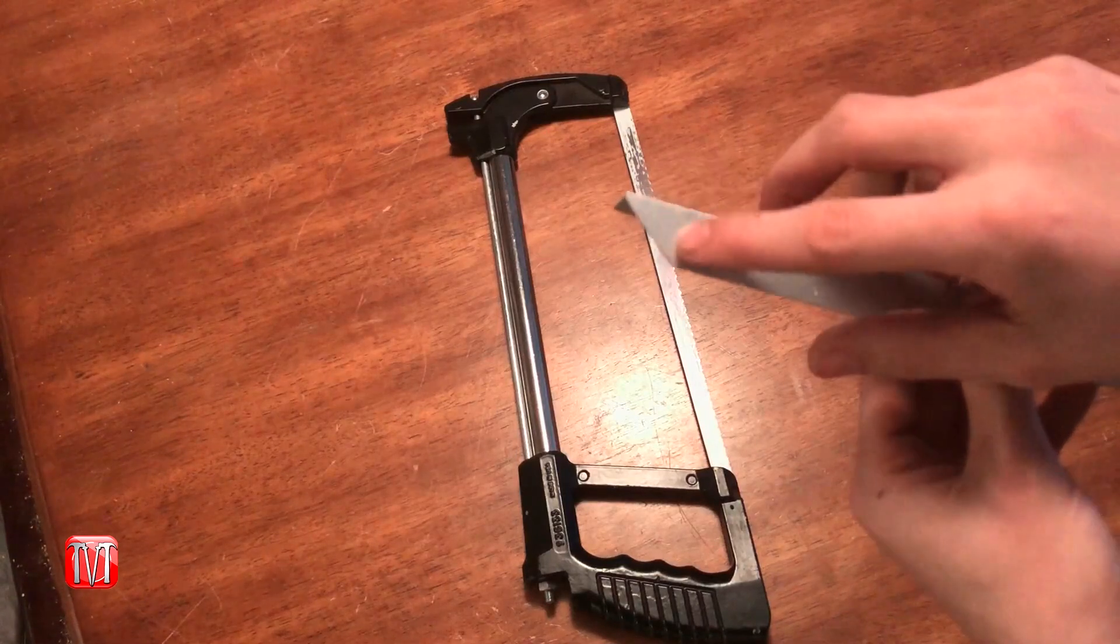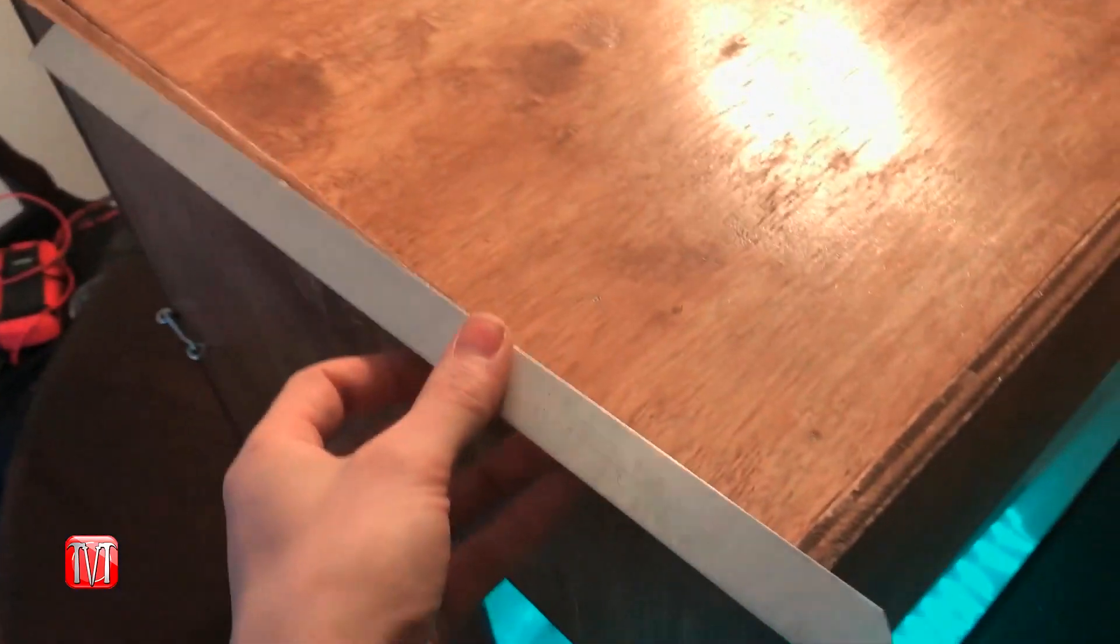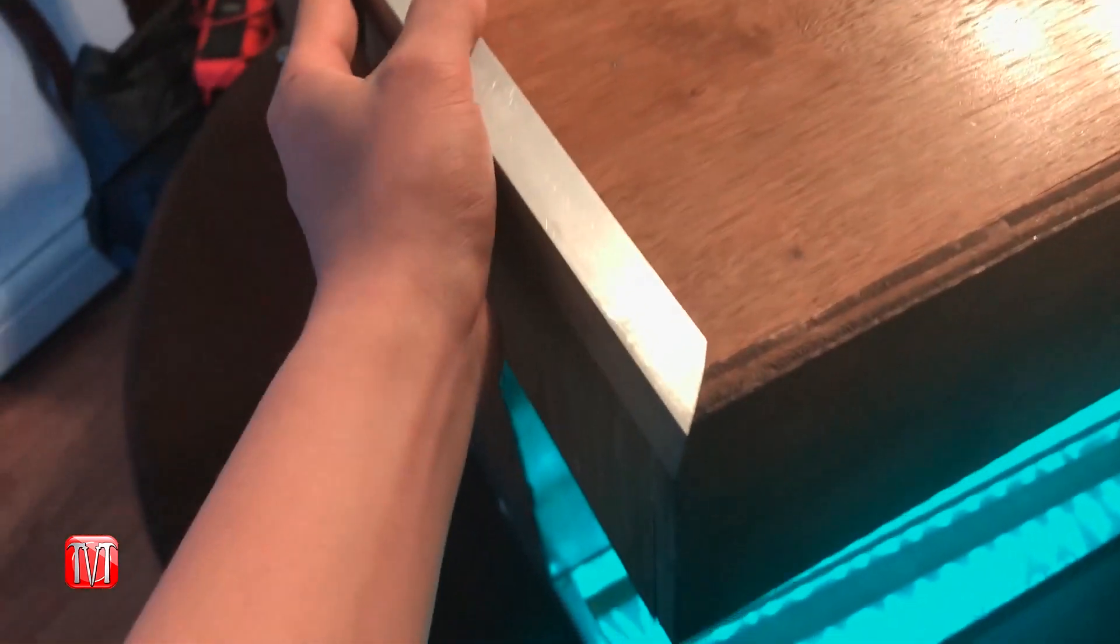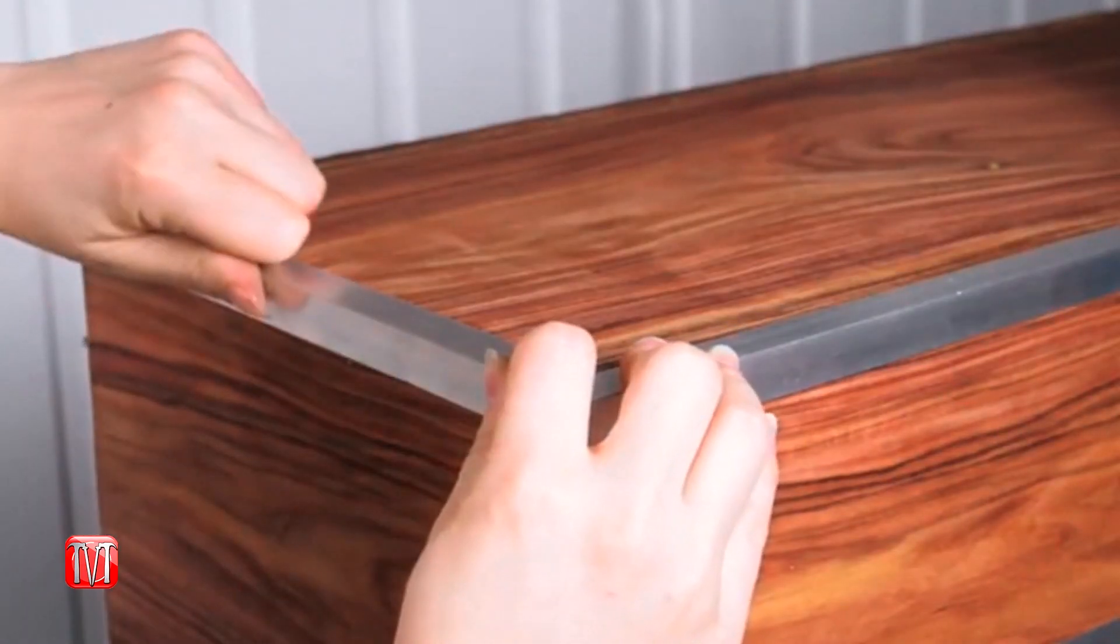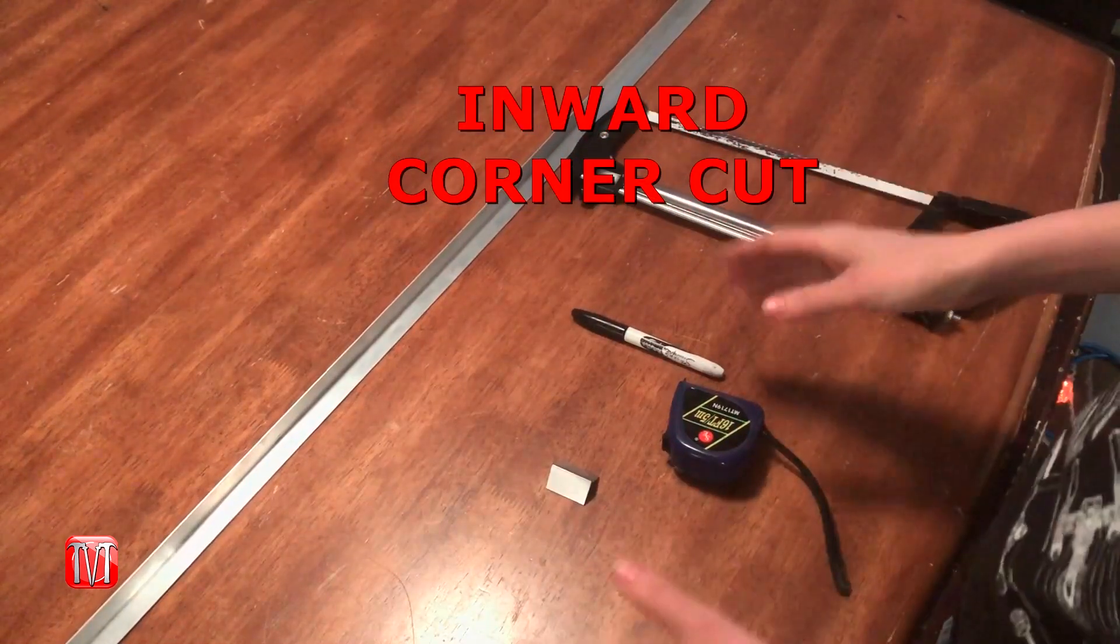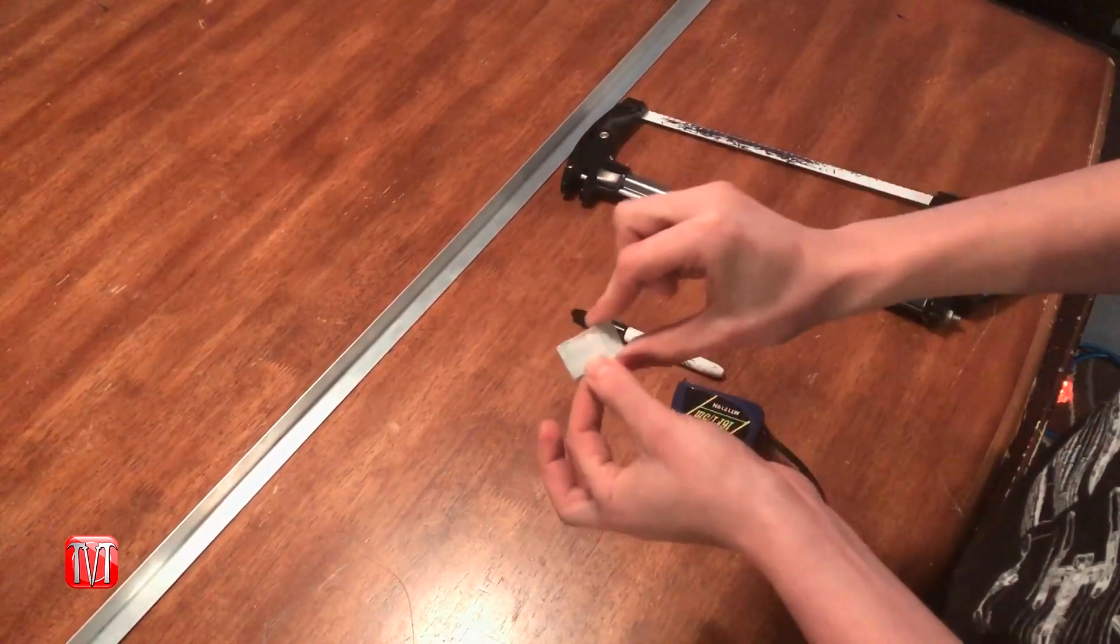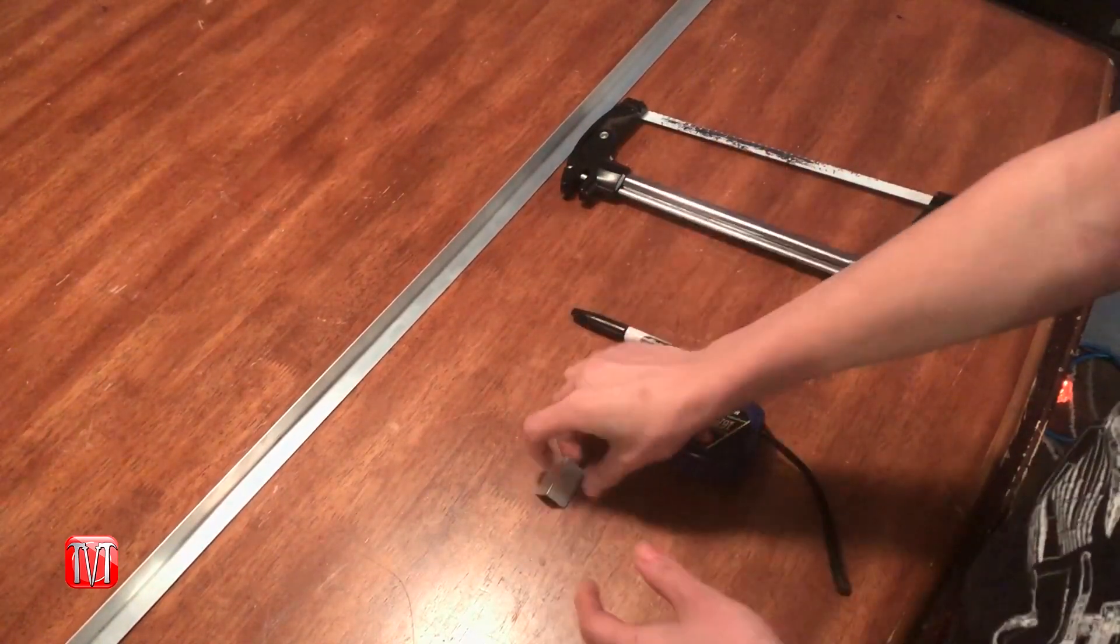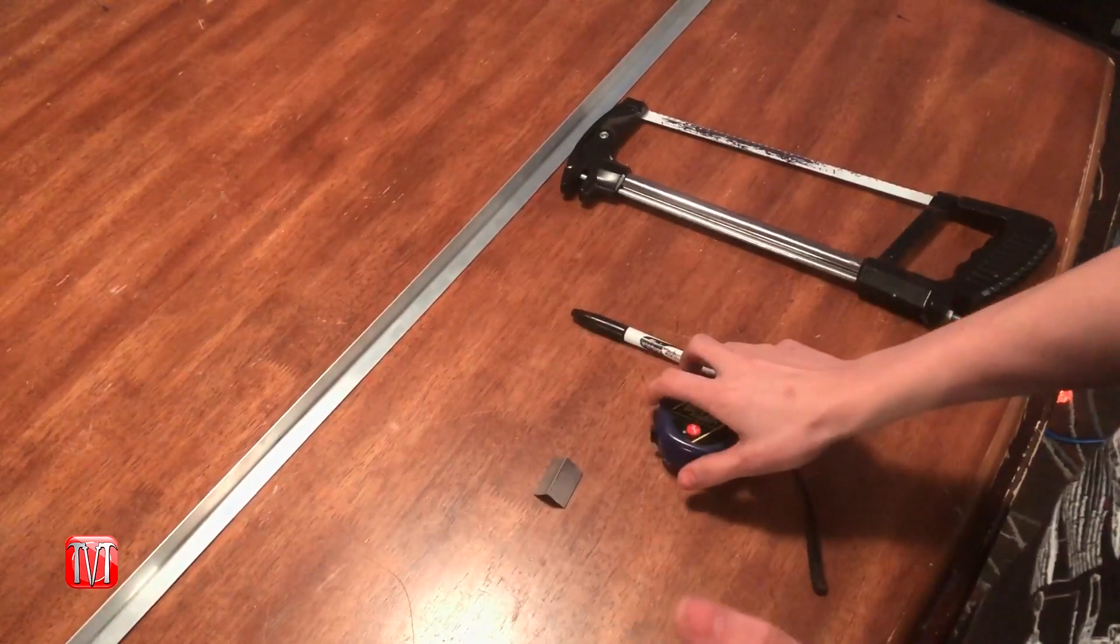Now we're going to do an inward corner cut. The most important part of this cut is to remember to measure the width of the material you're using and add that to the length of the piece that you're cutting that 45 degree angle. The reason behind that will be easier to explain later in the video.